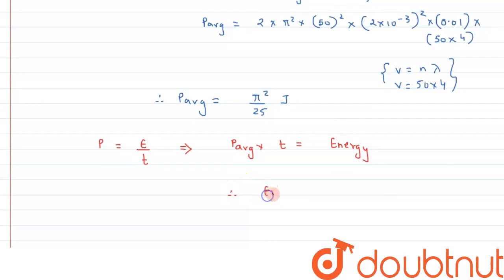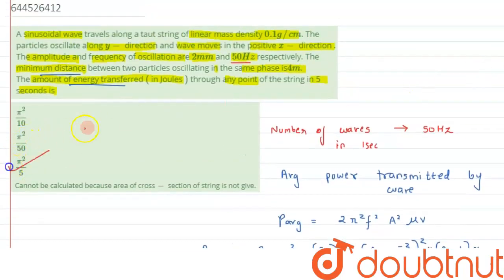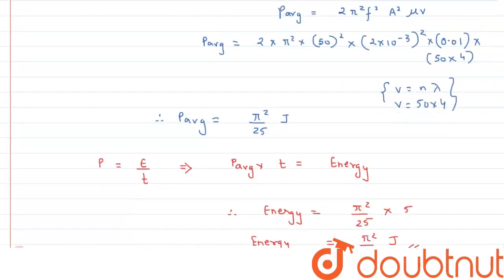Therefore, from here we can say energy will be nothing but P average, we have calculated it as π² by 25 × time is given as 5 seconds. So this value comes out to be π² by 5 Joules. This is the energy transferred in 5 seconds we are getting. And if we compare it with the option, option C is the right answer to this question. I hope you have understood the concept and thank you for watching.